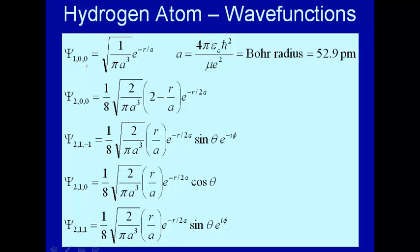So this is the 1, 0, 0, n equal 1, l equals 0, m sub l equals 0. This we recognize as a 1s orbital.